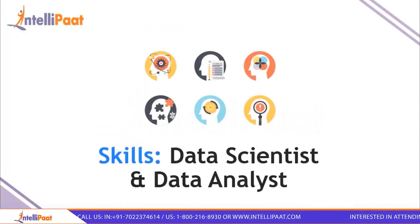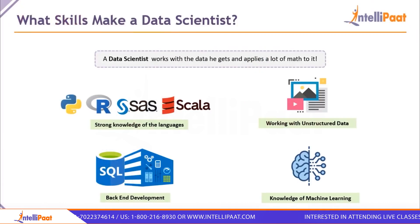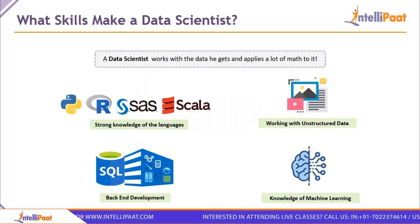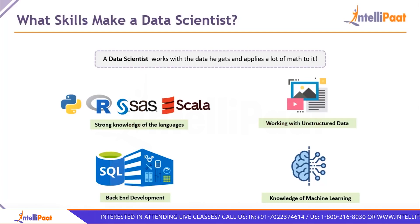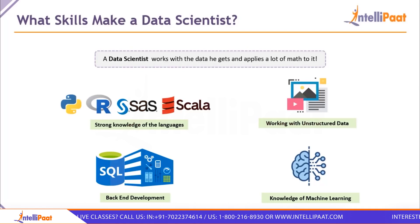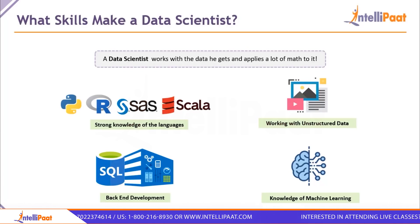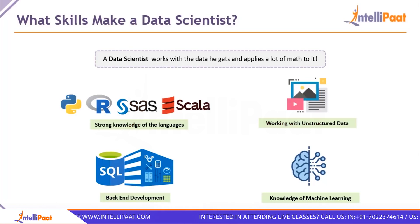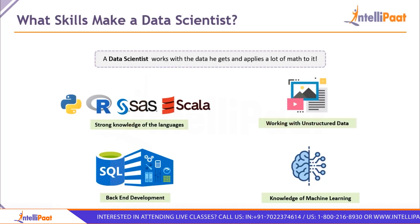A data scientist works with all the data they receive, applying a lot of mathematics and statistics. The primary skills required include strong knowledge of programming languages such as Python, R, SAS, and Scala. They also need to work with unstructured data — images, videos, music, and text. Backend development knowledge covering databases, data warehousing, and handling data on the backend is also important, as is knowledge of machine learning and sometimes deep learning to achieve artificial intelligence.